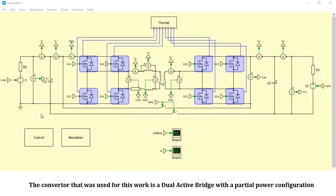The converter that was used for this work is a dual active bridge with a partial power configuration, which enables control of the output power of the converter, reducing conduction and switching losses. In this case, the total voltage is the sum of the output voltage of the converter and the voltage that enters directly from the battery.